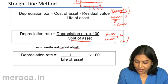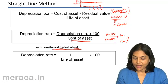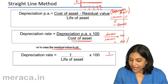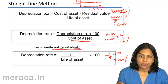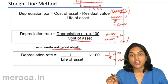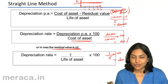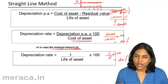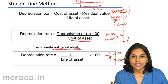In case the residual value is nil, the depreciation rate is also equal to 1 divided by the life of the asset, multiplied by 100. In our example, that is 1 by 5 into 100, which again gives 20%. However, this shortcut is relevant only when the residual value is nil, because the rate is applied on the cost of the asset, not on the depreciable amount, which is cost minus scrap value.